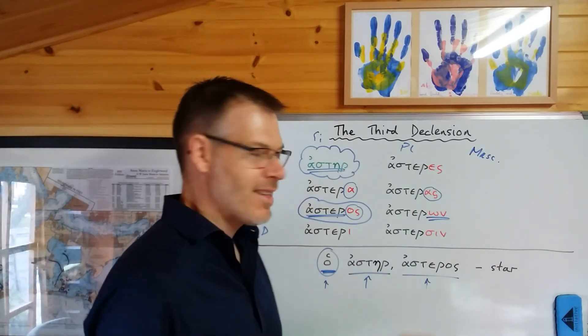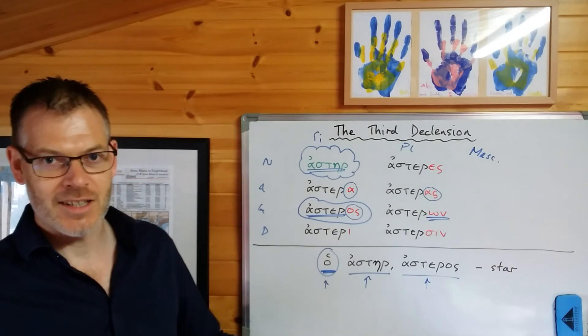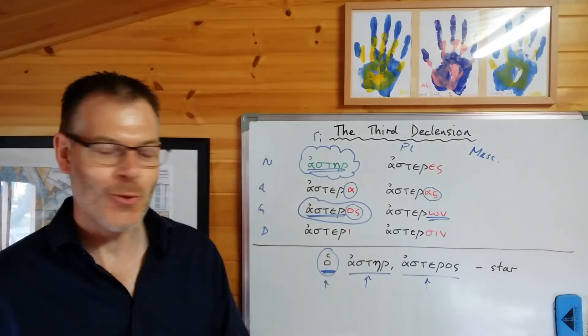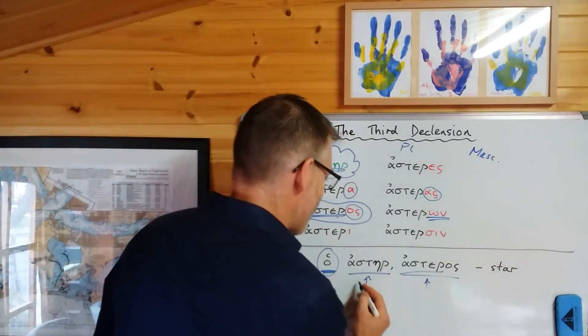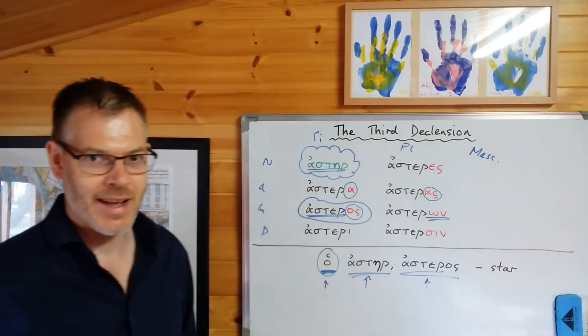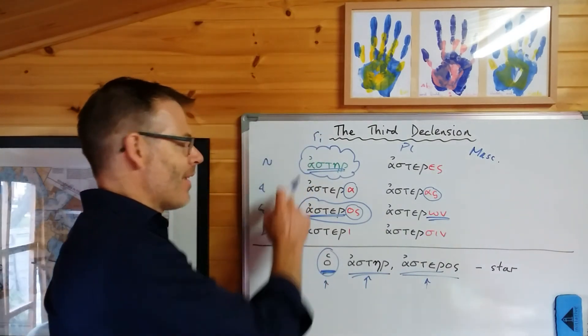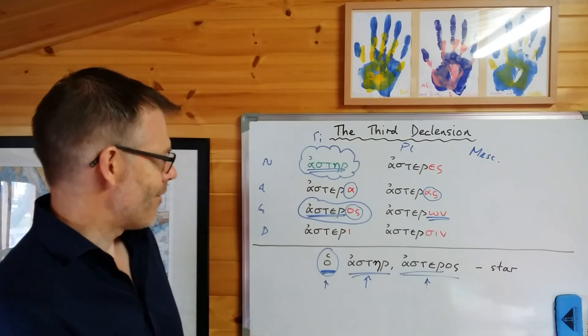...ho aster, asteros, ho aster, asteros, star. Learn it like that, and then you will always get all the information you need in order to work out the gender, the stem, and the slightly unusual nominative form.